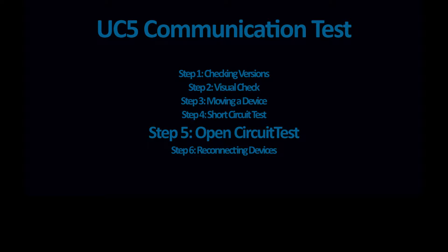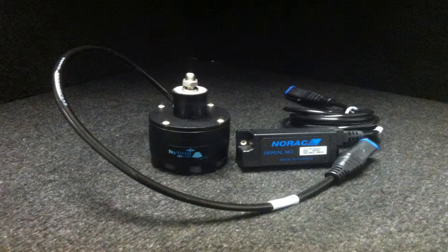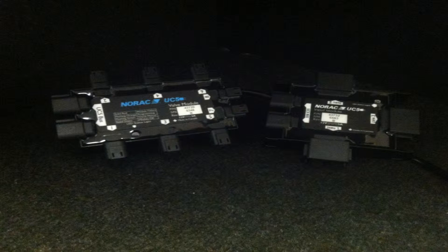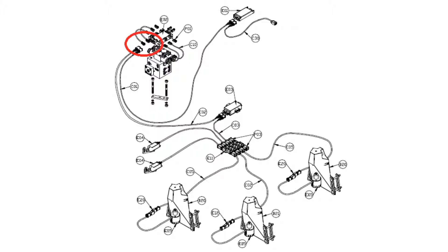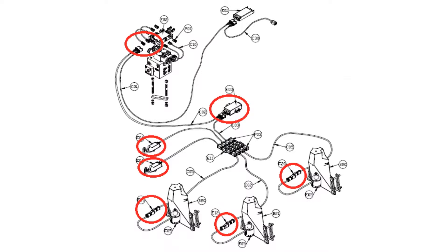This will be helpful if you have completed Steps 1 through 5 of the UC5 Communication Test Procedure. If so, you have determined that the CAN cabling is good and a sensor or module is bringing down the CAN bus. To determine which device or devices are causing the communication errors, you will need to add each device onto the CAN bus one at a time.